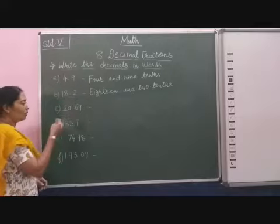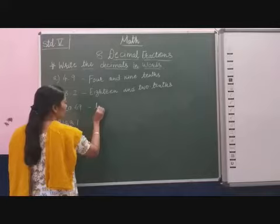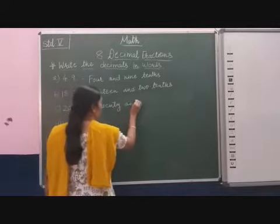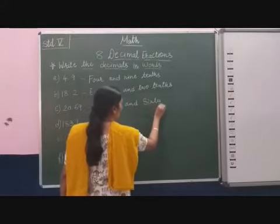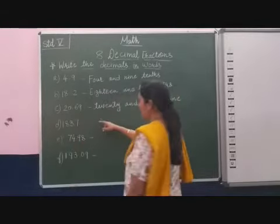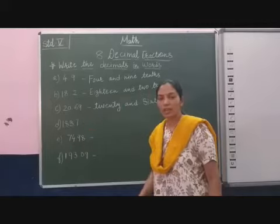Now here the 20.69. So how we will write here. 20 and 69. Now what if this 69 is? Here 69 hundredths.